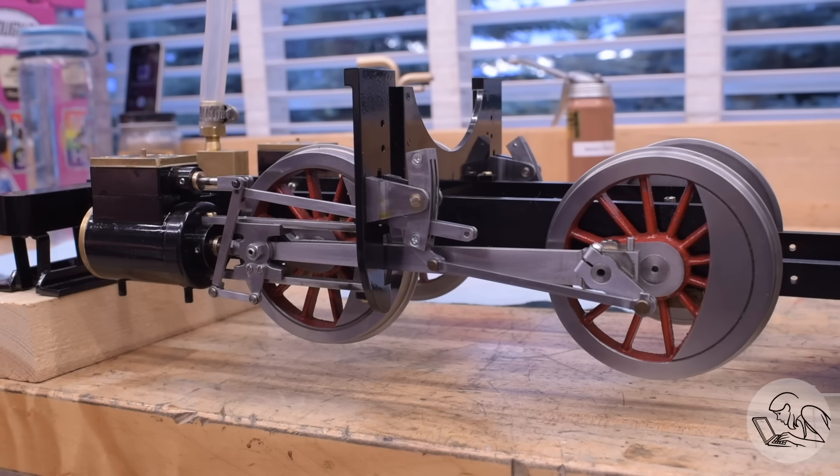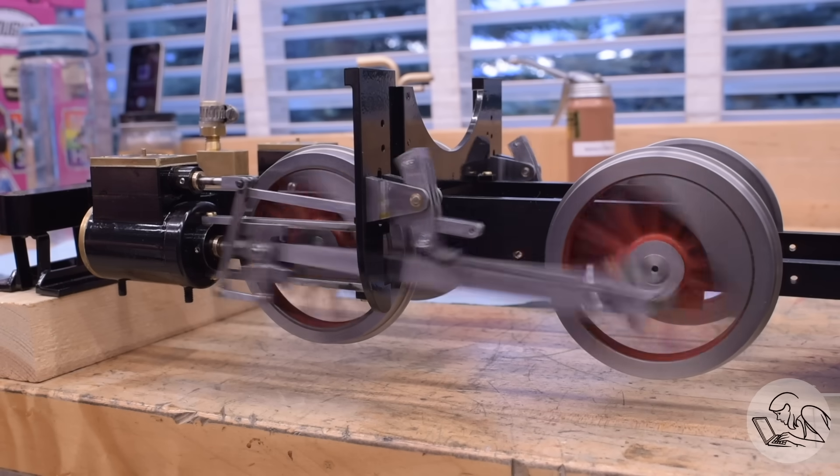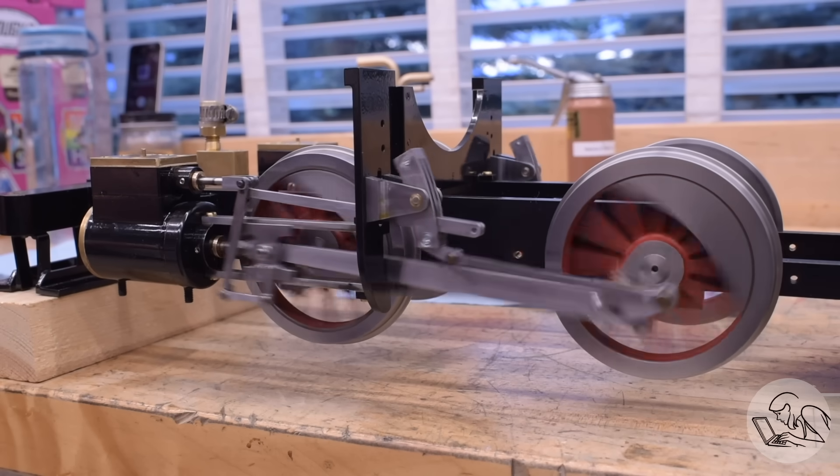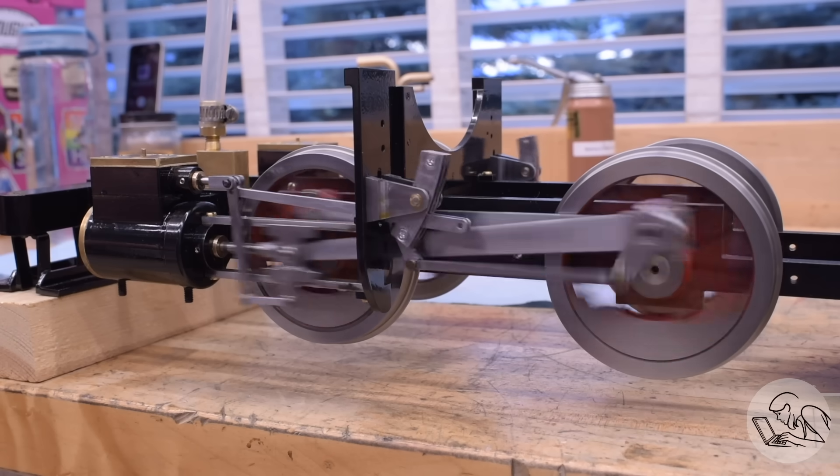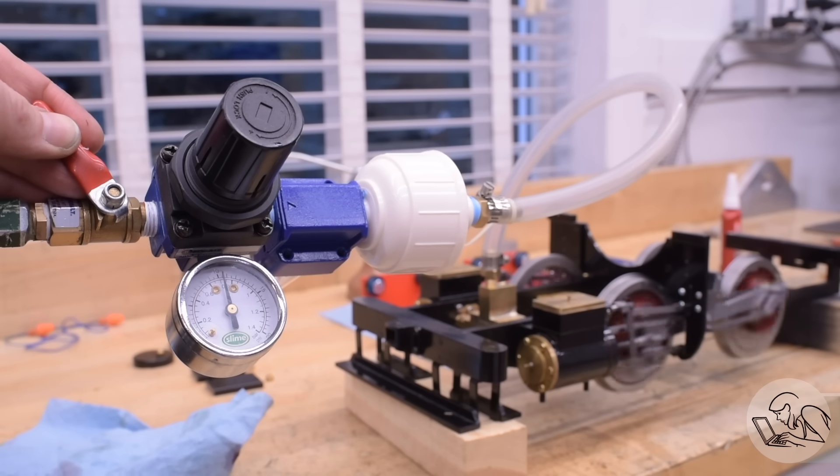After those improvements, it's a lot better. It self-starts now as you can see. The throttle is very jumpy because that air valve I'm using is very touchy. But it does self-start now and it's running on noticeably less air. As you can see now it's running on about 10 or 11 psi which is quite a bit better.